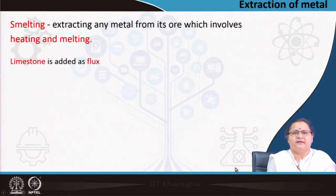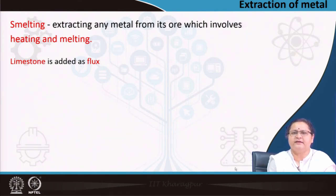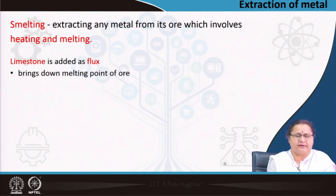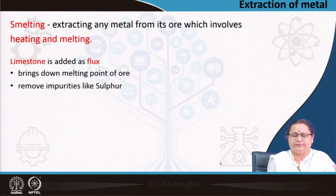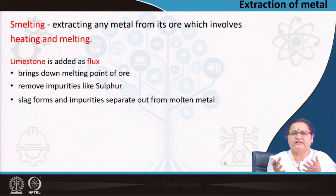Let us understand the process of smelting, which is extracting the metal from its ore — it involves heating and melting. We take the ore, heat it, and melt it up to the temperature at which it melts. Limestone is added as a flux or additive, which actually reduces the melting point. It also helps in removing impurities like sulfur and in the formation of a froth or slag, which is lighter in weight and separates out from the molten metal.